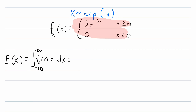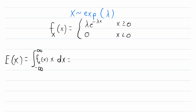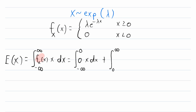We want to substitute our actual PDF in for f of x. That immediately brings about a small complication, because our PDF takes on different values depending on the piece of the domain we're looking at, so we'll have to split this integral up. First, we'll have an integral from negative infinity to 0, where the PDF equals 0, giving us the integral of 0 times x dx. The other piece covers from 0 to positive infinity, where the PDF is lambda e to the negative lambda x, multiplied by x dx.